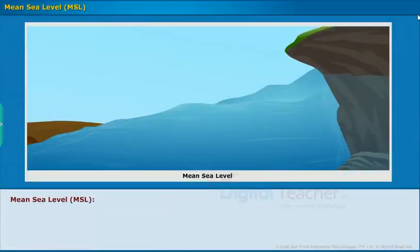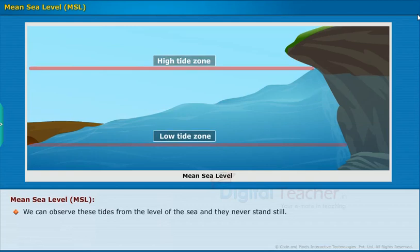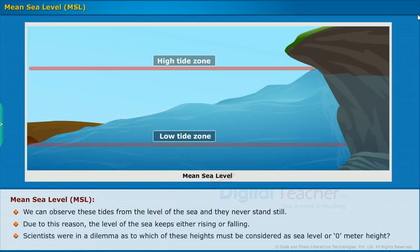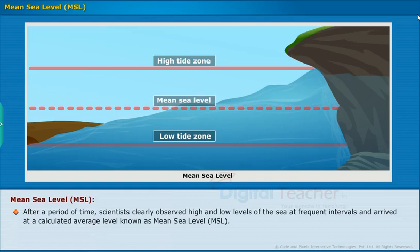Now let us learn what is meant by mean sea level. Water tides are of two types: low tide and high tide. These tides cause the sea level to keep either rising or falling, so it never stands still. Scientists were in a dilemma as to which level should be considered as sea level, or zero meter height. After observation over a period of time, scientists recorded the high and low levels of the sea at frequent intervals and arrived at a calculated average level, known as the mean sea level.